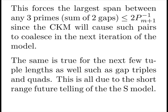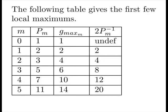This rule also forces the largest span between any three primes, the sum of two gaps, to be less than or equal to twice our next prime minus 1, since the composite killing machine will cause such pairs to coalesce in the next iteration of the model. The same is true for the next few tuple lengths, as well as gap triples and quads. This is all due to the short-range future telling of the S model.